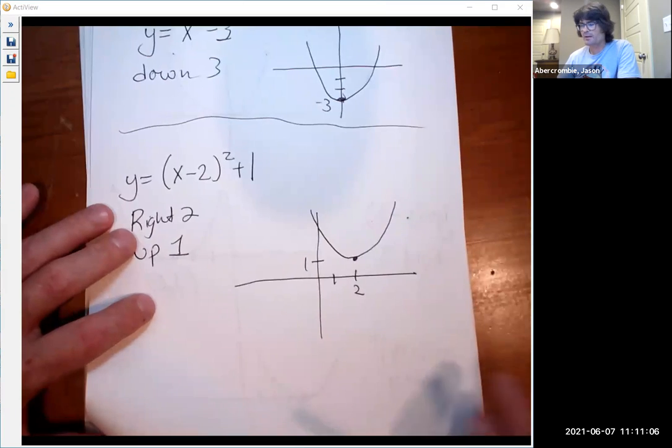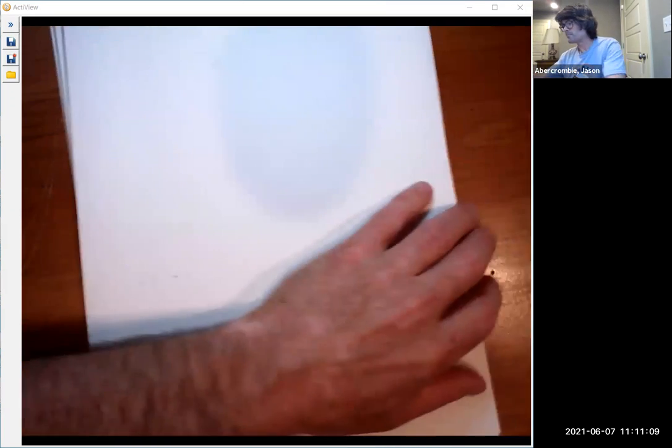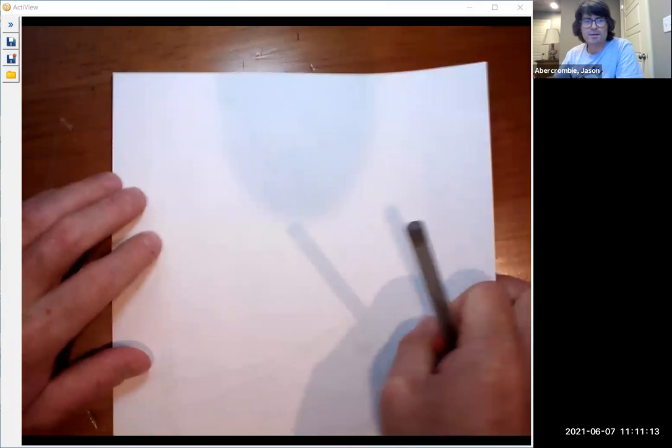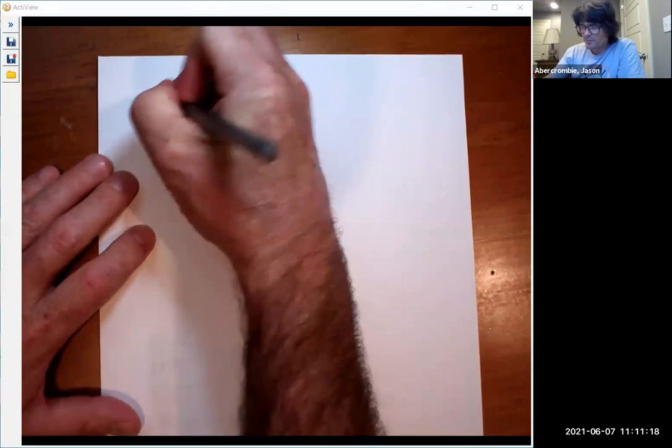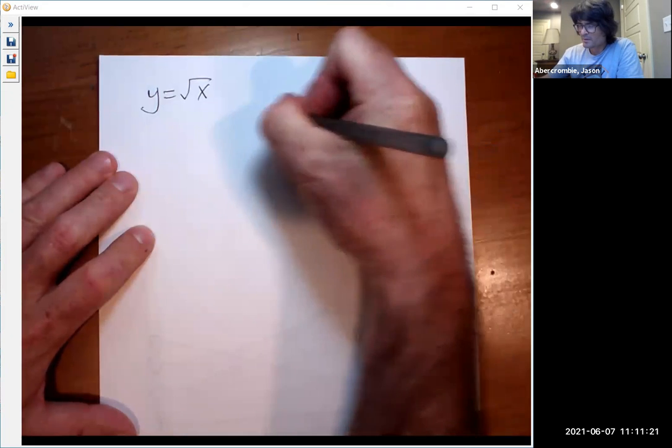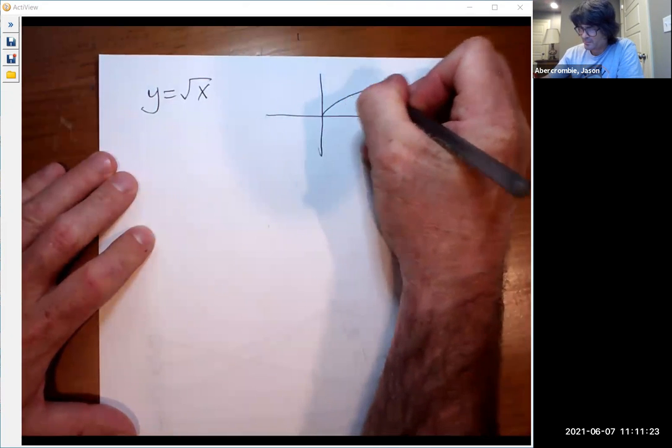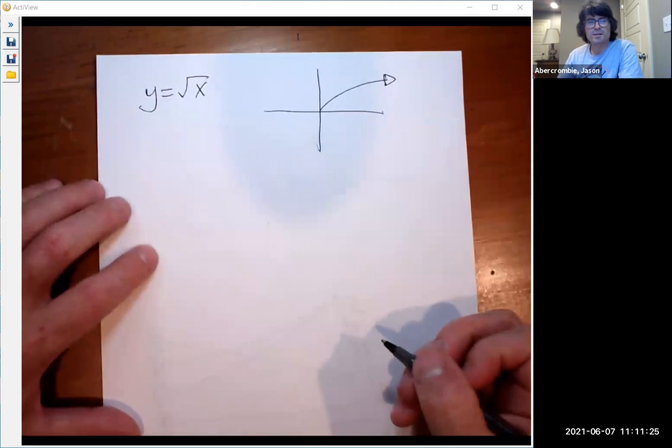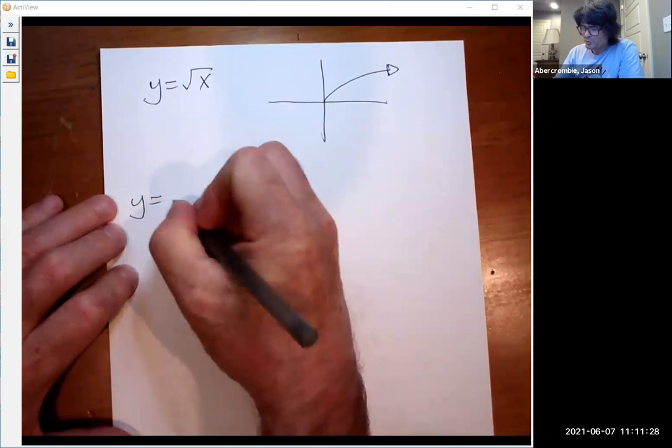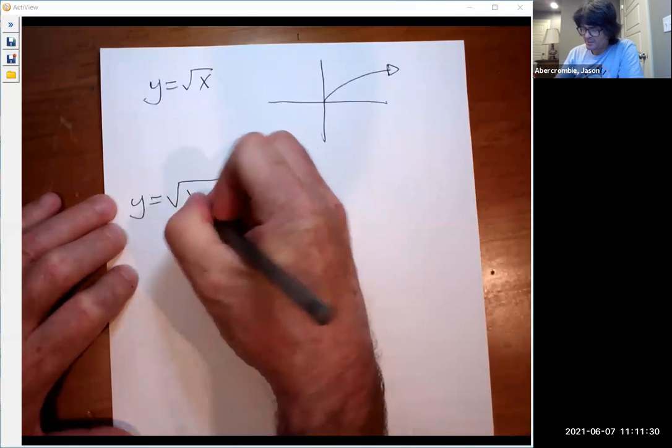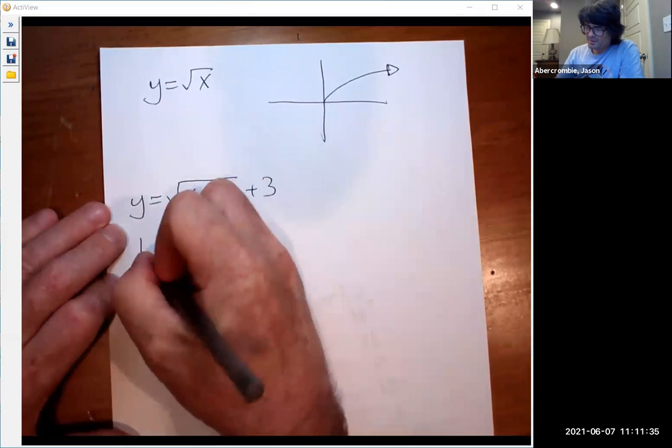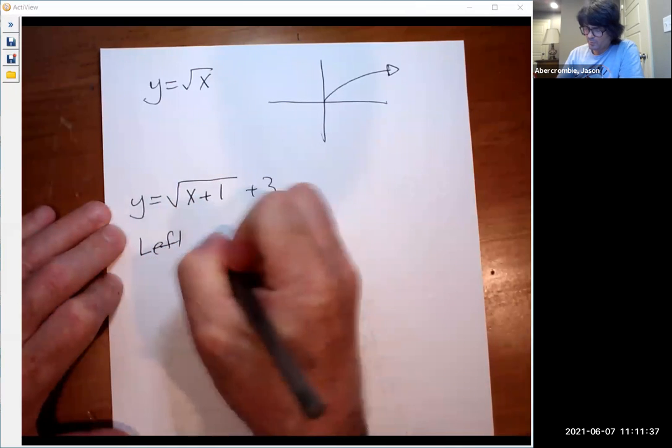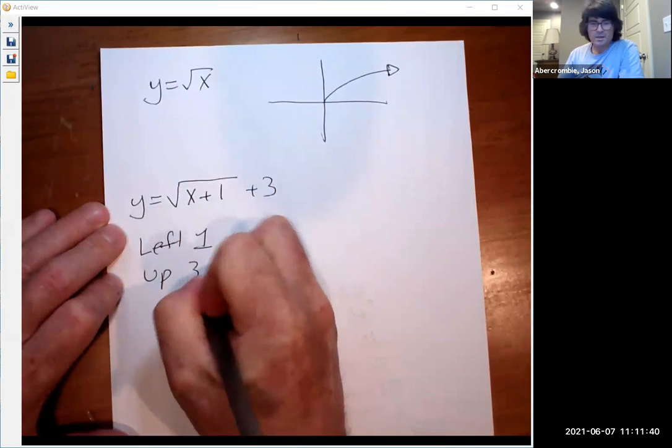Let's try this with some other types of graphs. So the good thing about translations is it works the same for any kind of graph at all. So let's do the square root of x. That looks roughly like this. Starts at 0, 0. If you want to translate it, say we do x plus 1 and then plus 3. This is left 1, up 3.